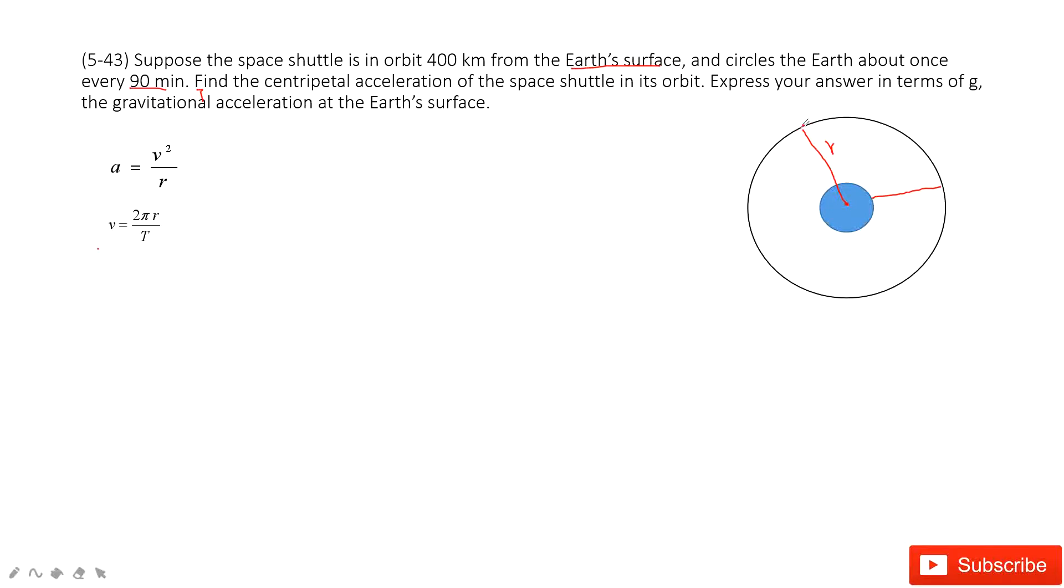Because for one circle, it is 2πr divided by time taken t. Therefore, we can input the v inside. We find the acceleration is 4π²r divided by t².